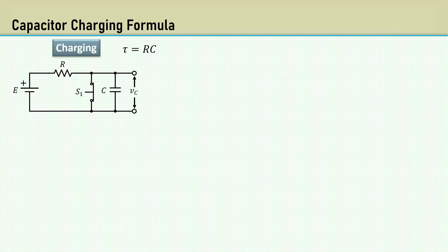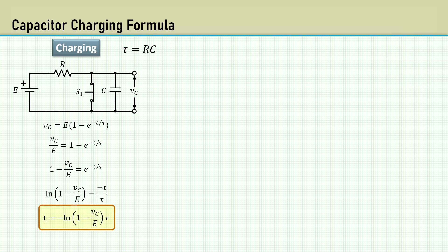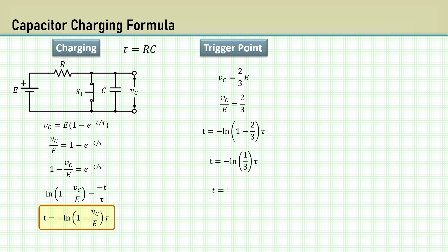Let's mathematically derive it. Here's our capacitor charging circuit. The formula for the capacitor voltage is a function of time. Let's rearrange to solve it for T. The trigger point for the timing is 2/3 of the power supply E. So VC over E is 2/3. Plugging in the 2/3 into the equation results in 1.098 tau, a more exact number than 1.1.